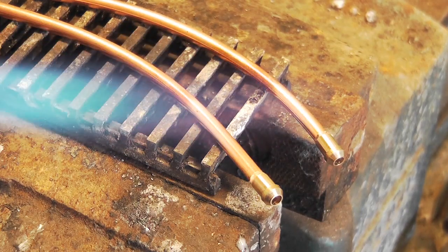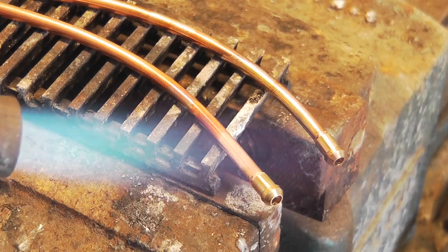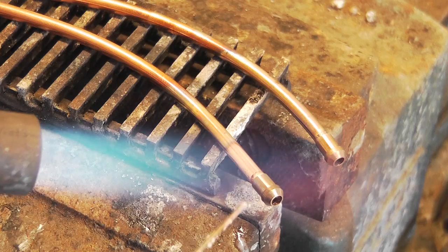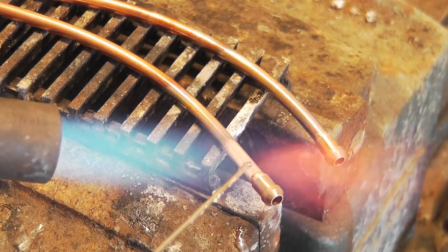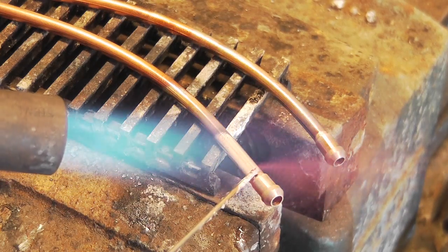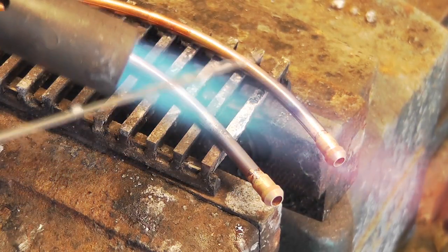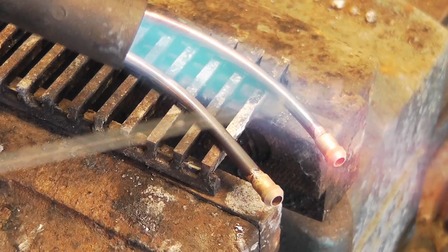Now apply the hottest part of the flame to where the nipple meets the copper pipe. When the flux takes on a watery runny appearance, that's the time to just touch it with the rod of silver solder. You only need a very very small amount. It will flash around the joint and everything will be fine.